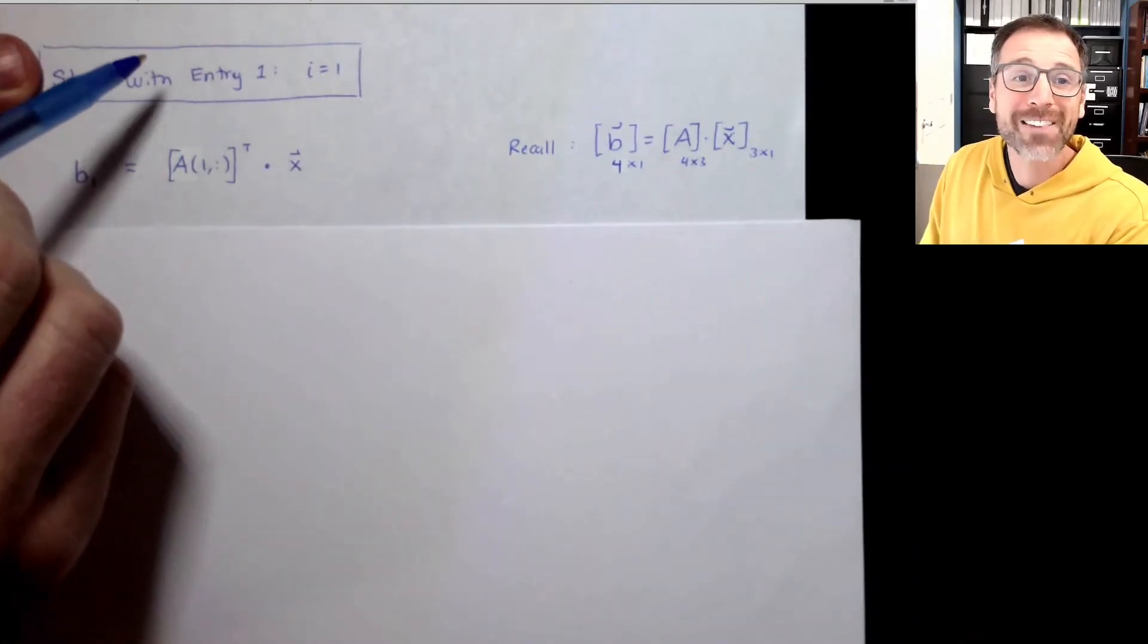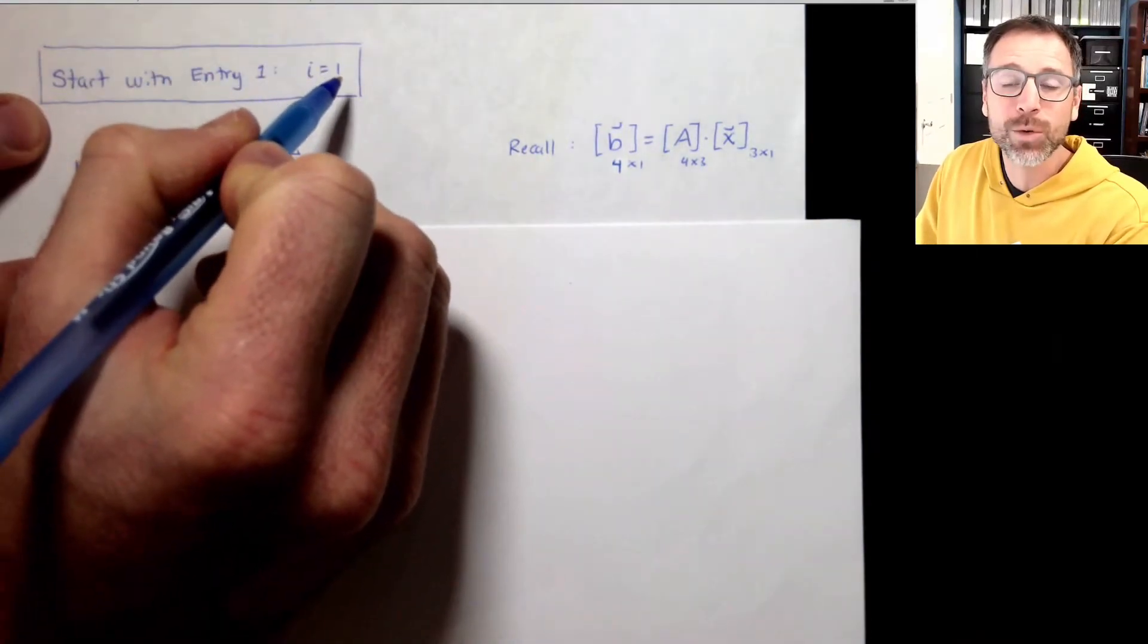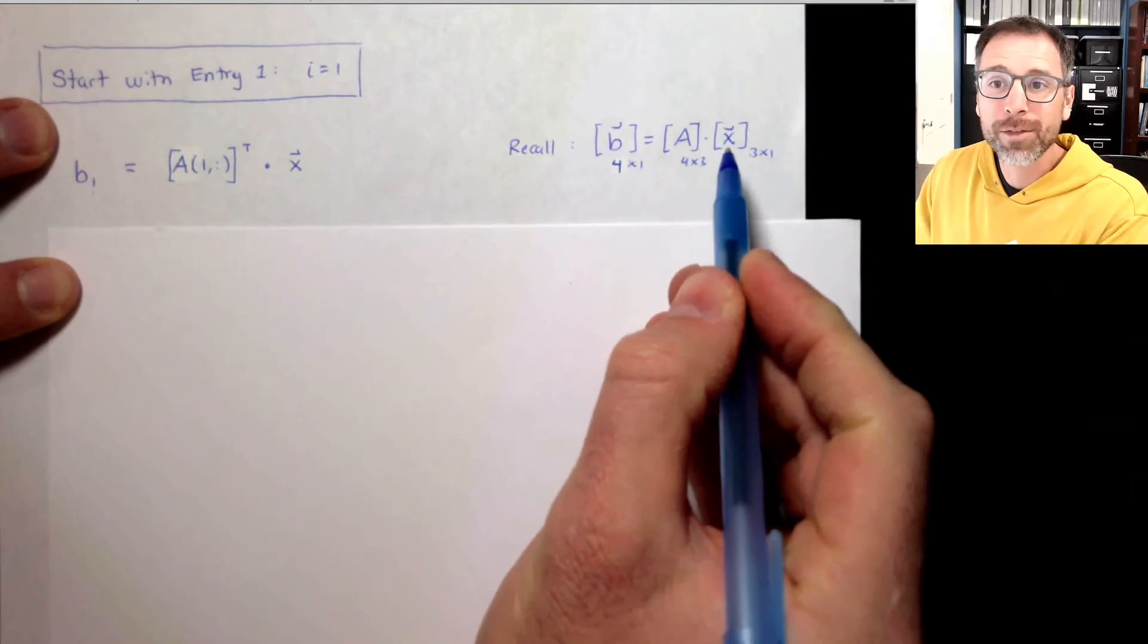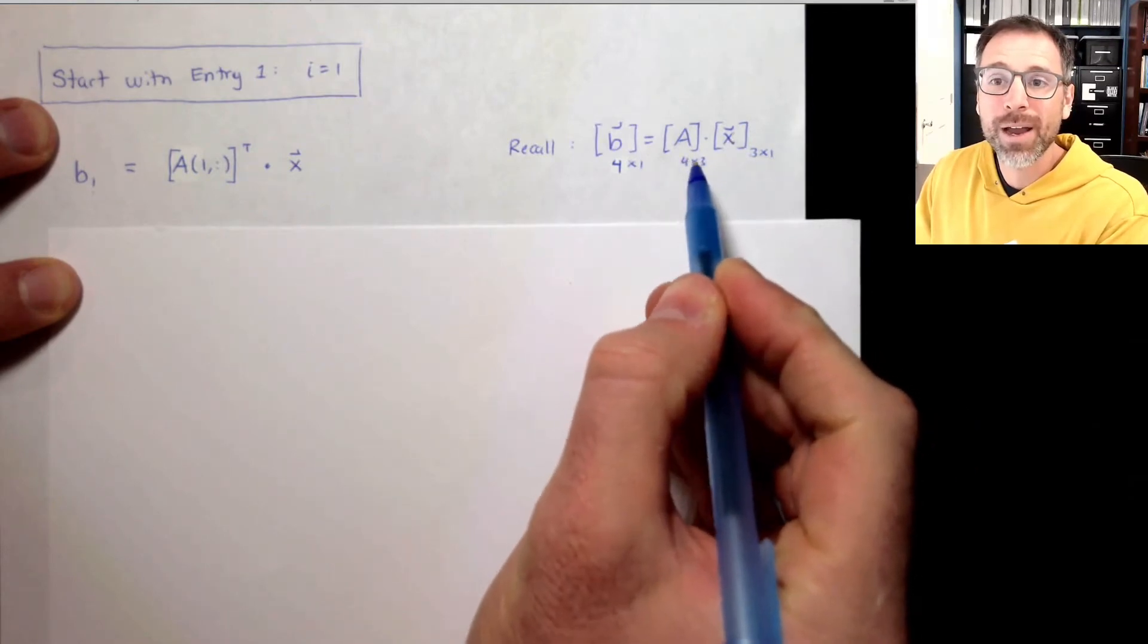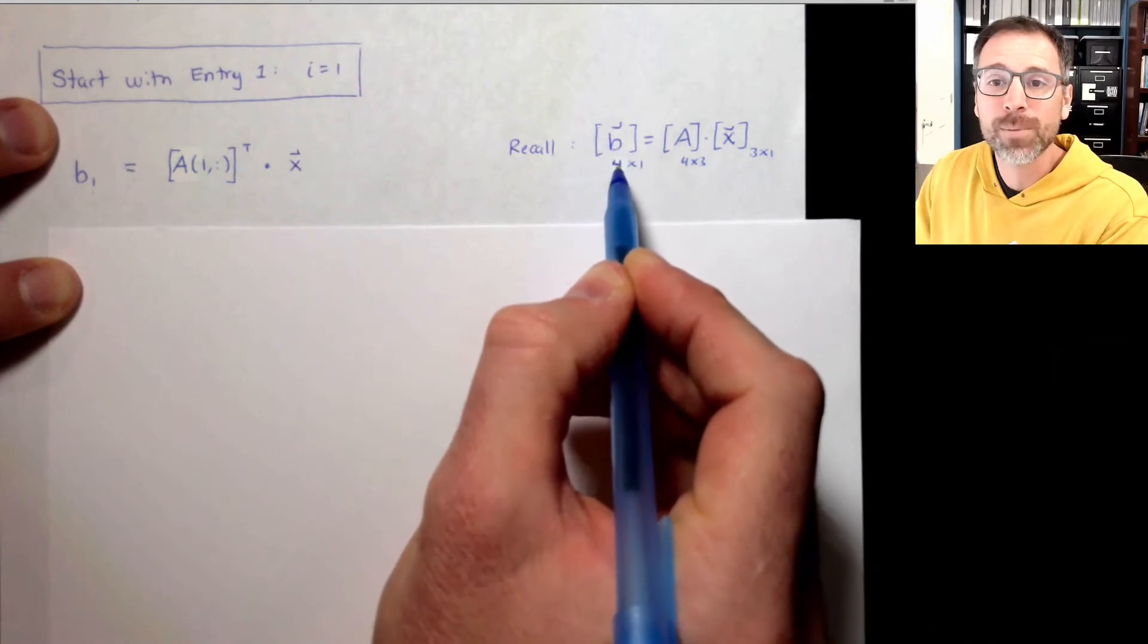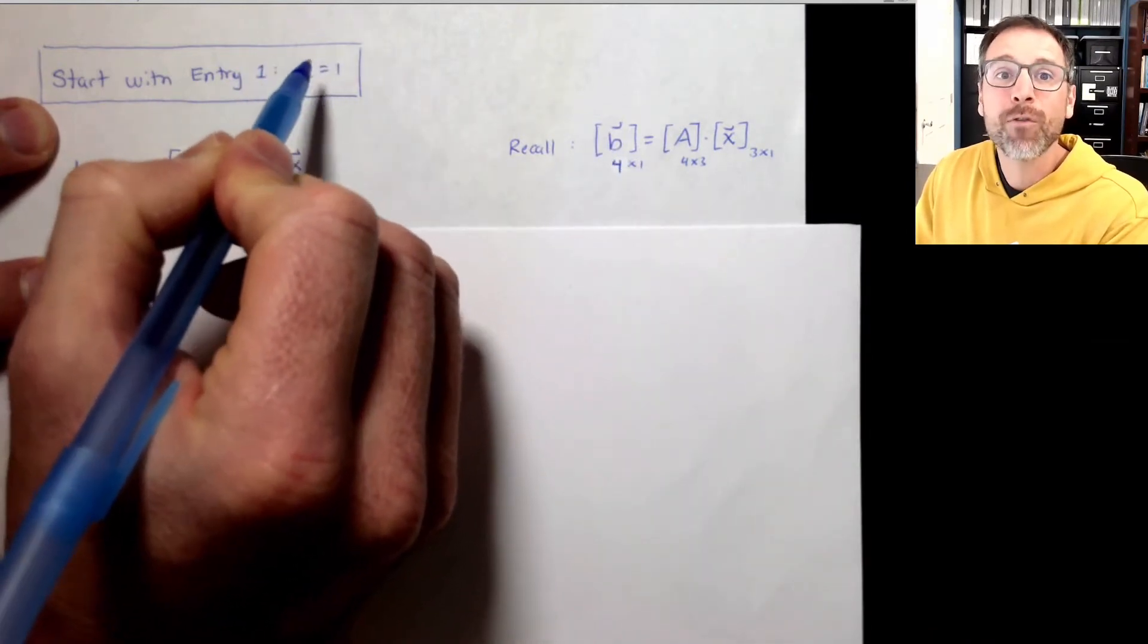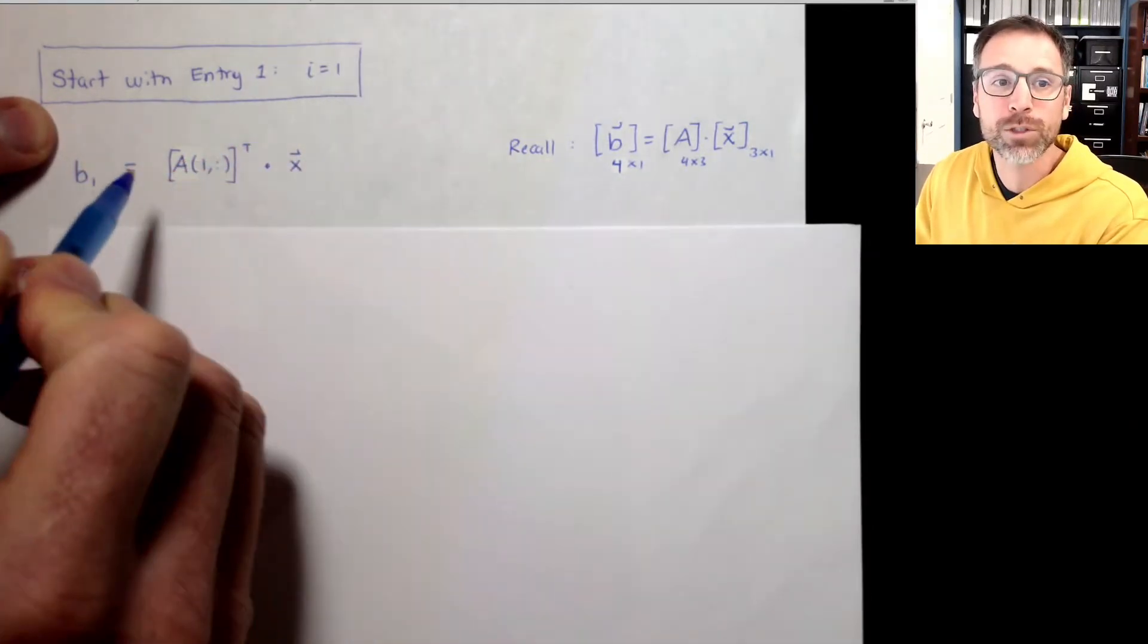With that definition at hand, let's start with our first entry. In this case, we'll start with the entry i equals 1. Remember, since A is 4 by 3, X is 3 by 1, the inner dimensions must agree. Those cancel out and the output is going to be 4 by 1, which means we're going to do four separate calculations when i equals 1, 2, 3, and 4.